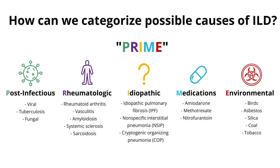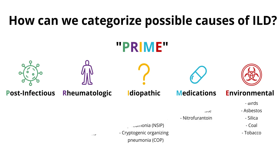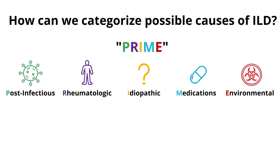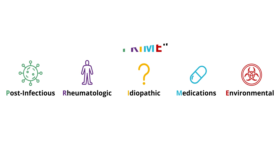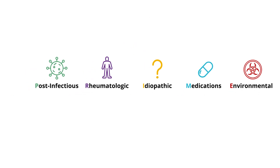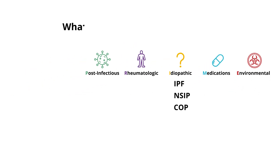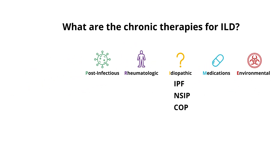Once we have a general understanding of which category of ILD our patient fits into, we can start thinking about what kind of treatment they'll need. Chronic therapies for ILD fall into two big categories: number one, antifibrotics, and number two, immunosuppressants.